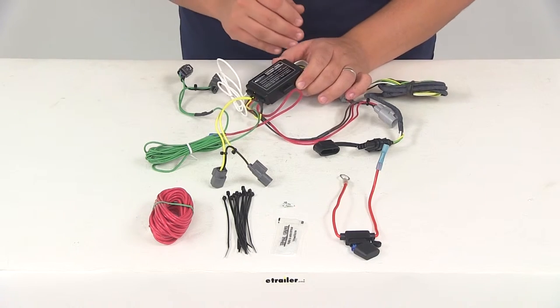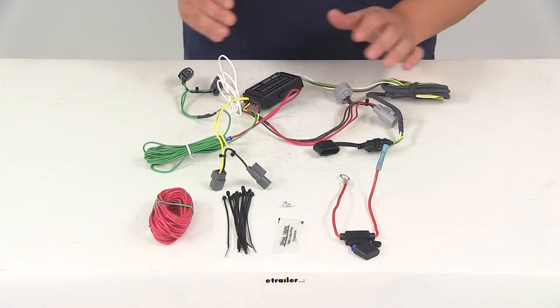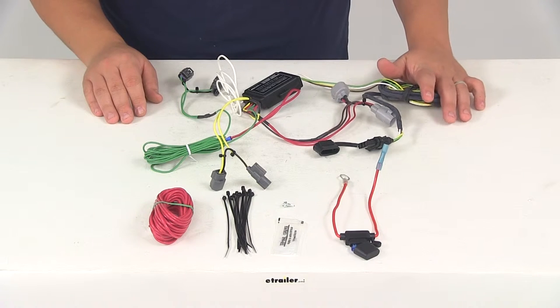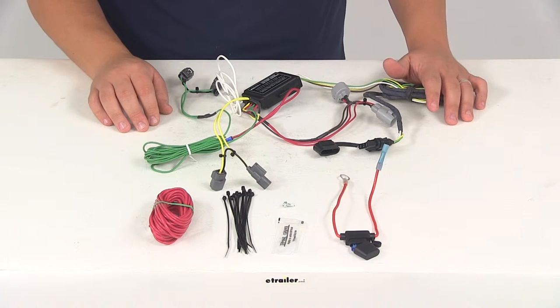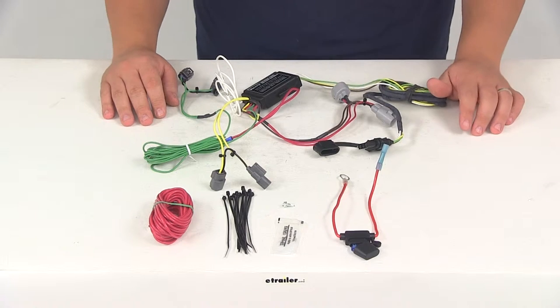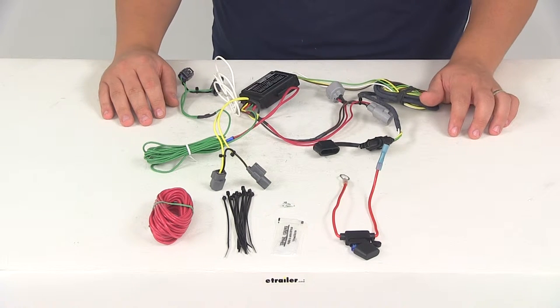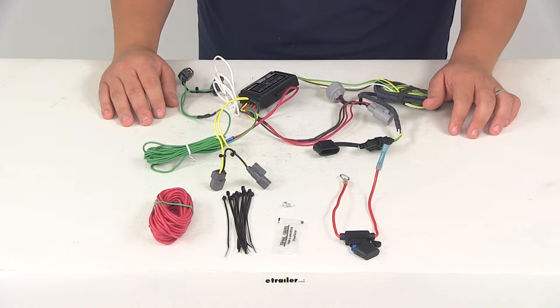Now again, this is a plug-in simple vehicle wiring harness, so it's going to connect quickly and easily. On the back of the product packaging slip is where you're going to find the detailed instructions for the installation process, but you'll need to begin by locating the connection points in the rear cargo area.